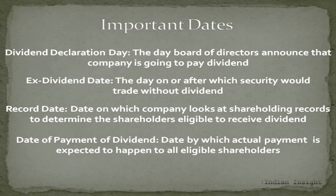This brings us to our next important date: the record date. The record date is the date on which the company looks at the shareholding records to determine which shareholders will be receiving the dividend. The investor's name must be on the records on this date. In order to ensure that, the investor may need to be holding the shares 2 or 3 days before the record date, depending on the settlement cycle in the country in which the stock is listed.